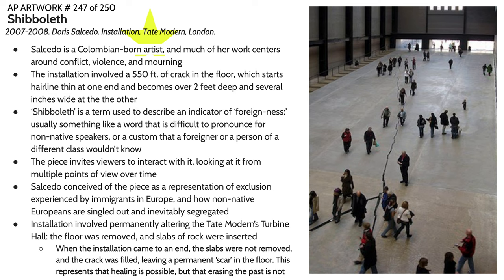This is particularly significant — it represents that healing is possible, but that erasing the past and the pain caused by ostracizing communities is never something that really goes away. This is comparable to the anecdote of a person hammering nails into a post and then removing them: you can inflict pain and then remove the thing that causes it, but there are still holes in the post.